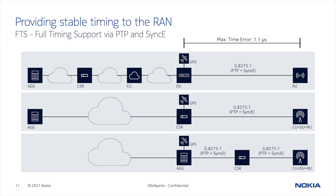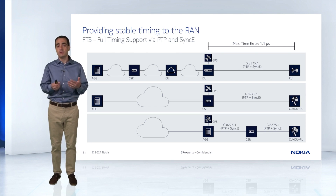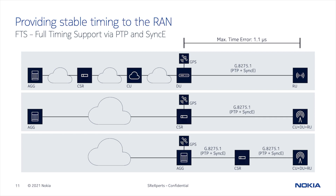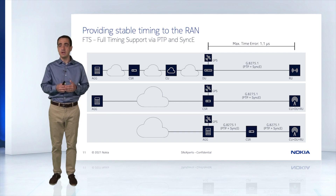Let's look at the most typical solution used to provide timing to all of the radios in a 5G transport network: Full Timing Support, or FTS. This means that all of the nodes in the path — all the way from the timing signal to the radio — must support timing protocols. The profile specified by ITU for that is G8275.1, which outlines that PTP or IEEE 1588 is used for time recovery, and synchronous Ethernet is used for frequency recovery. That timing signal is typically directly derived from a GNSS receiver or GPS and transported all the way to the radio, with all nodes supporting timing protocols in between.